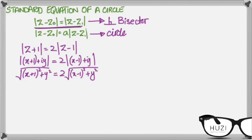And now, to remove the under root, we square both sides, so we are left with x plus 1 whole squared plus y whole squared equals to 4.